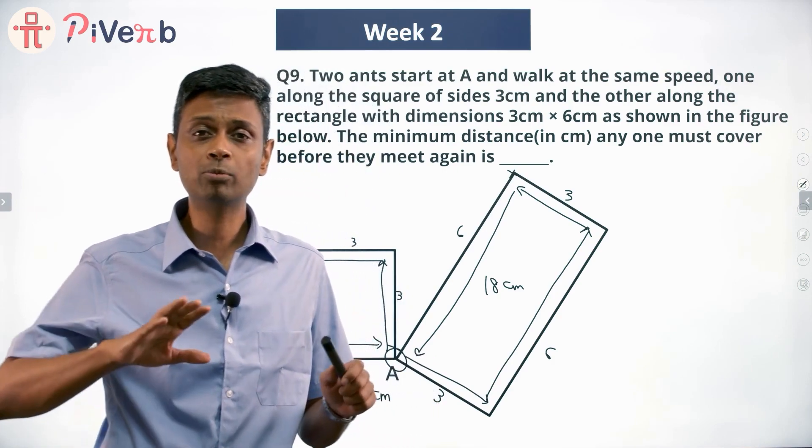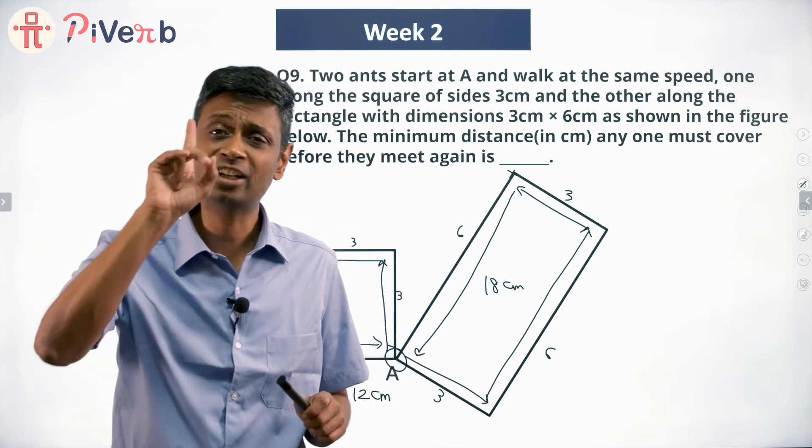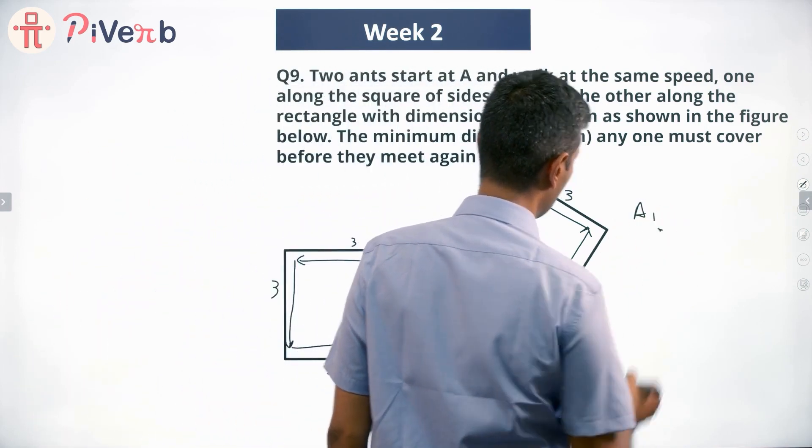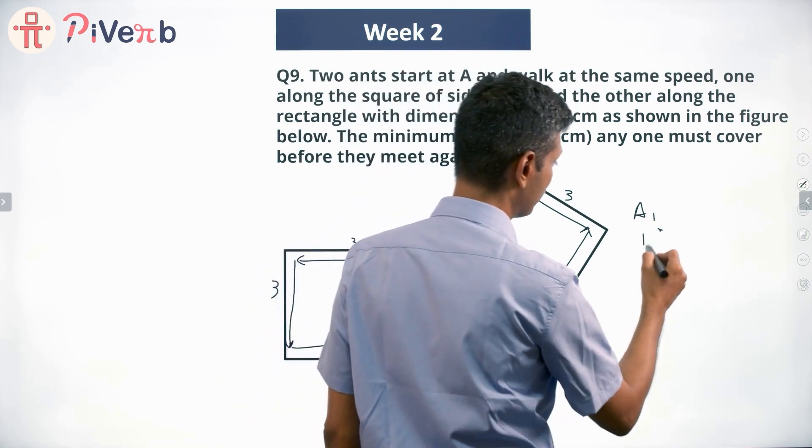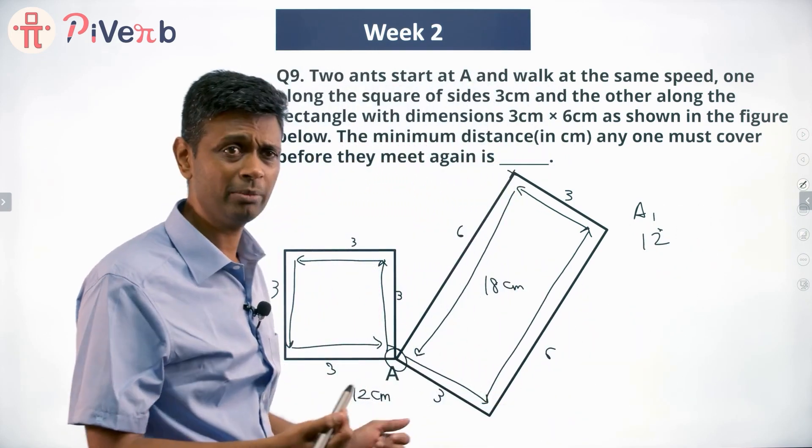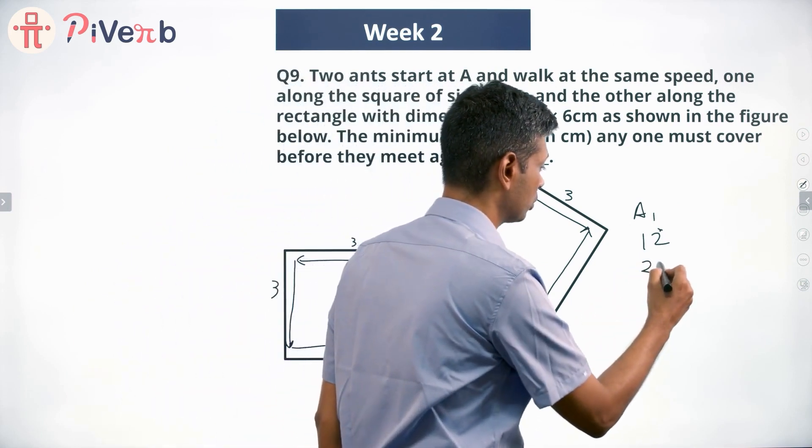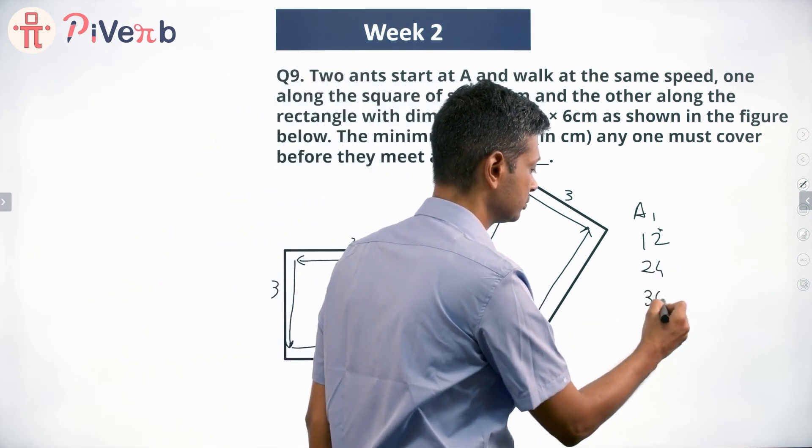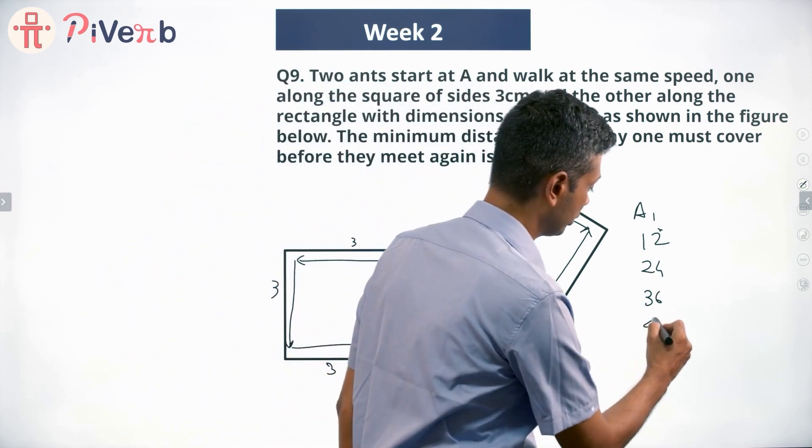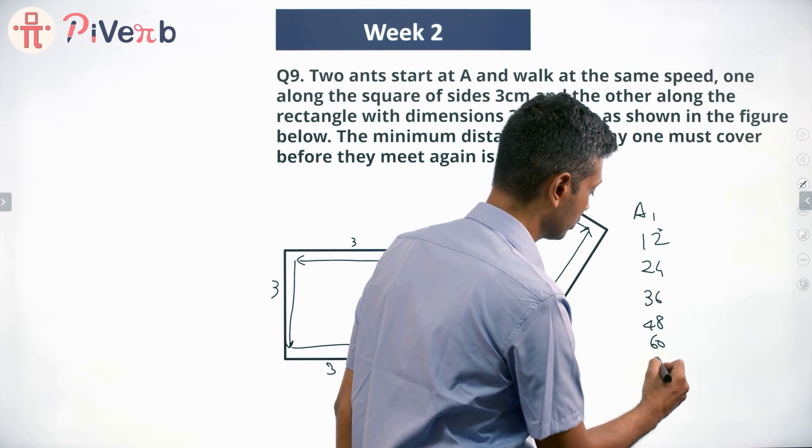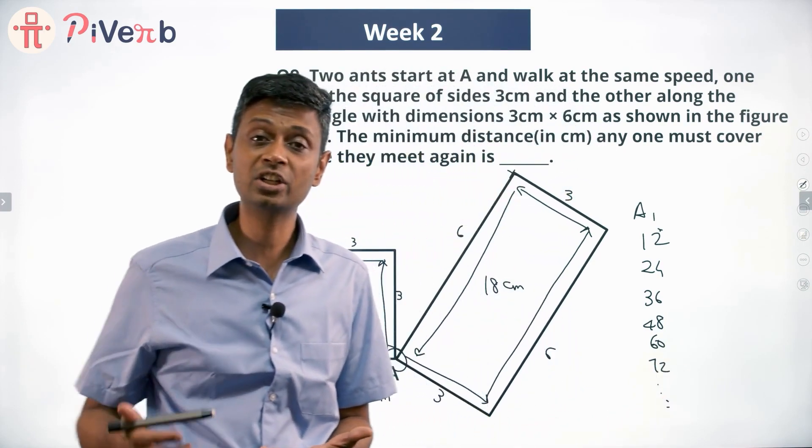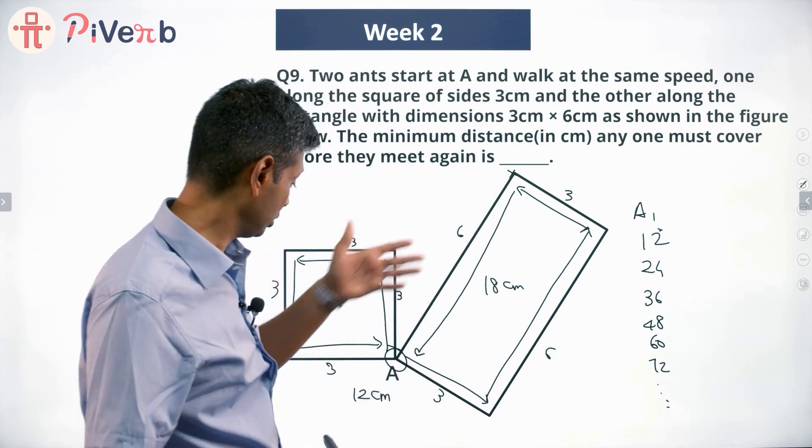Now I am going to forget about both of them. I am going to track ant one alone. Ant 1 will be at the point A after he has traveled 12 centimeters. That is clear. And then when will be the next time he will be at A? After he has traveled 24, after he has traveled 36, one more round, one more round, one more round and so on. So 36, 48, 60, 72. Each of those 12 centimeter additional bits, ant A1 will be here.